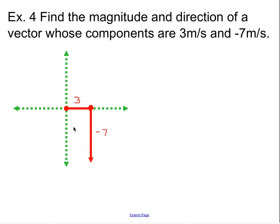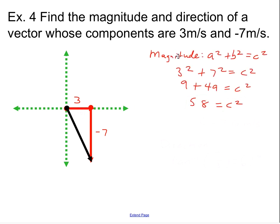And we want to find the resultant magnitude and direction. So here's the resultant, starting from the center again, going out to the tip of the second component. And we want to find its magnitude. So that's an a squared plus b squared equals c squared problem, and square root both sides for your answer. So the magnitude is 7.6 meters per second.